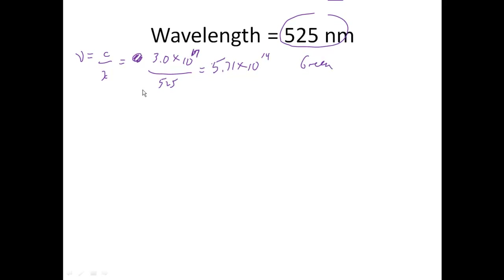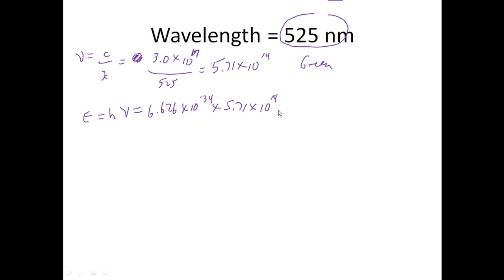So now I still have to calculate energy. Energy is Planck's constant times the frequency. So that's 6.626 times 10 to the minus 34th multiplied by 5.71 times 10 to the 14th. And when we multiply that out, we come up with 3.79 times 10 to the minus 19th joules.